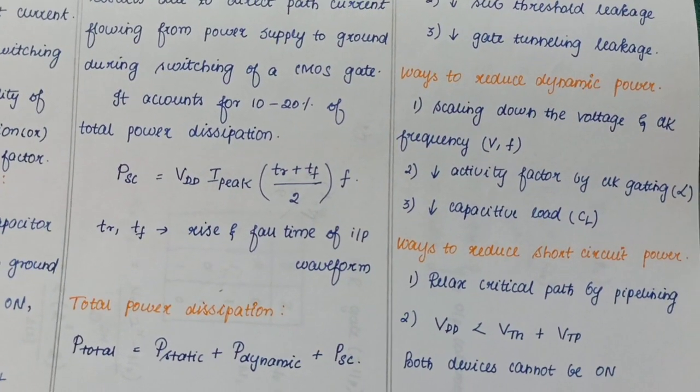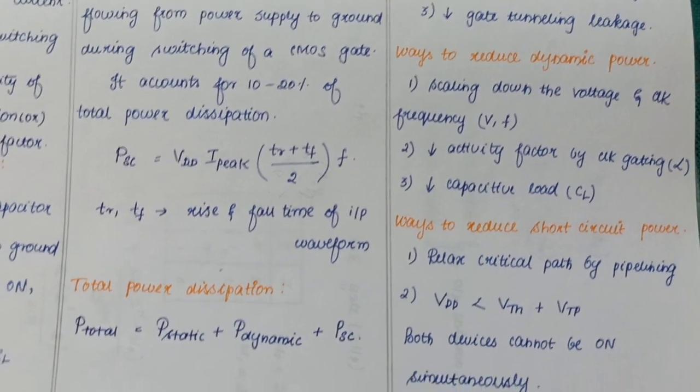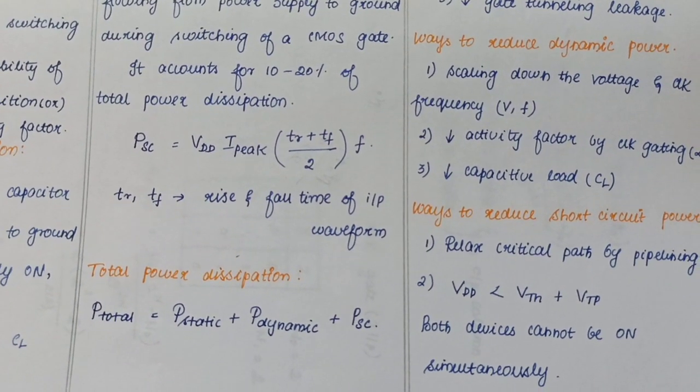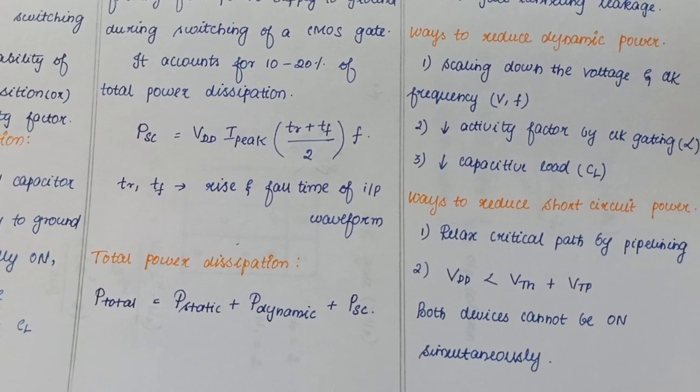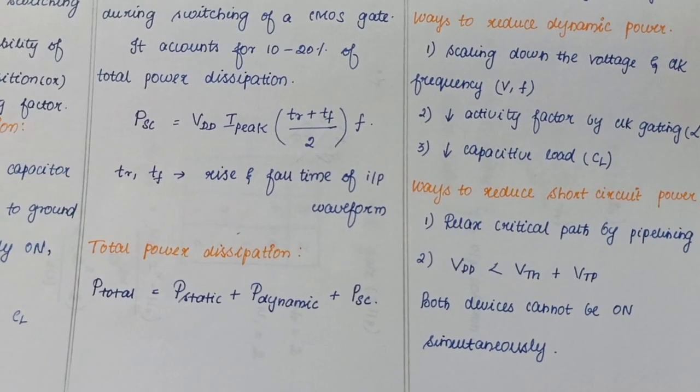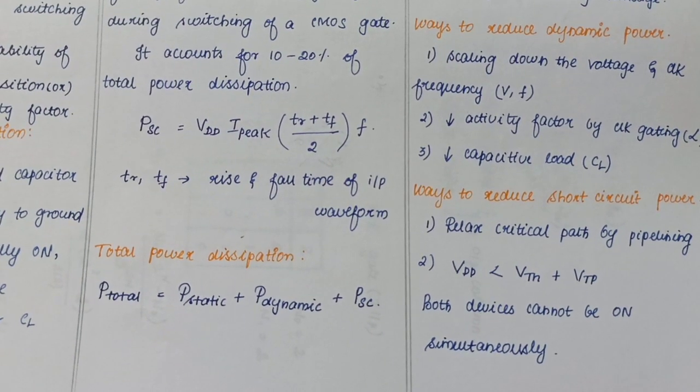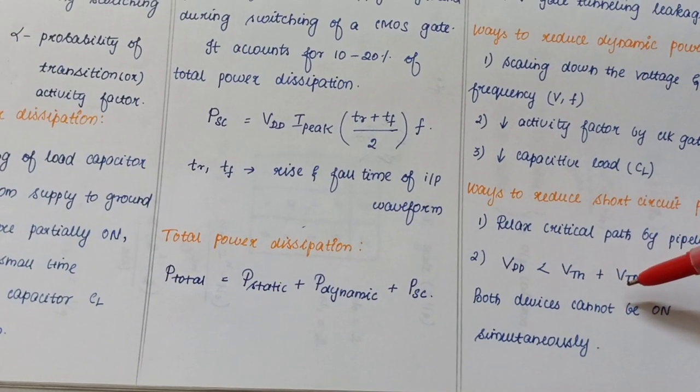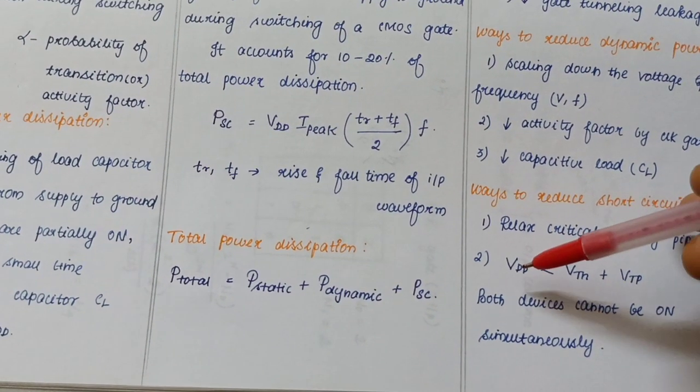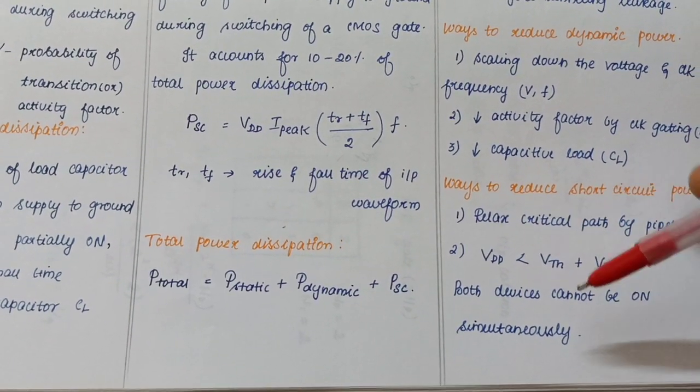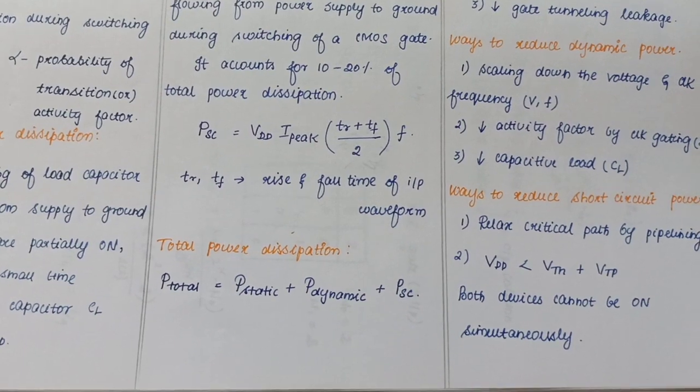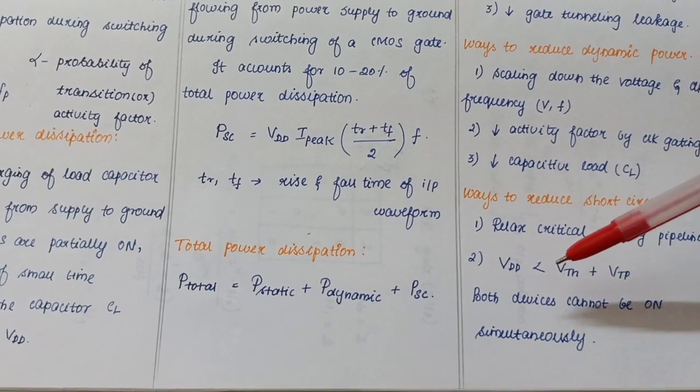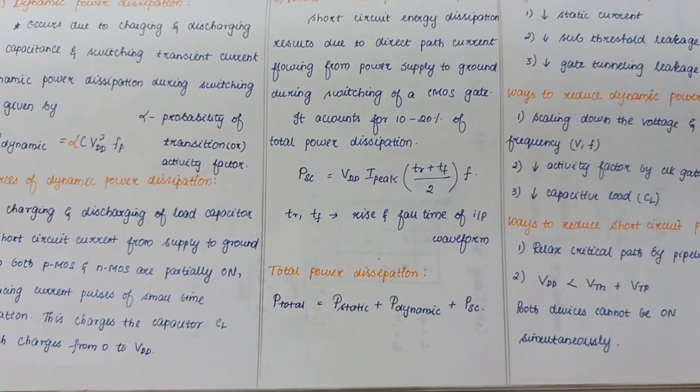Ways to reduce short circuit power: similar to dynamic power, reduce those three values, plus additionally we can use pipelining. Next, VDD must be less than the threshold voltage of NMOS transistor plus PMOS transistor. In this condition, both transistors will not be on at the same time, so there will be no short circuit path from supply to ground.